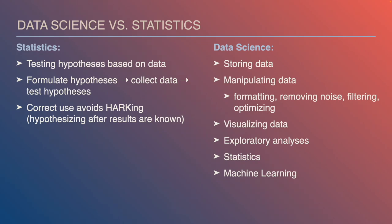We can use statistics to test particular hypotheses, and we can also use machine learning to make predictions from our data as to what other data might look like. If we collect additional data, we could use machine learning to make predictions about that data — for example, whether a person is characteristic of a particular disease or is healthy.